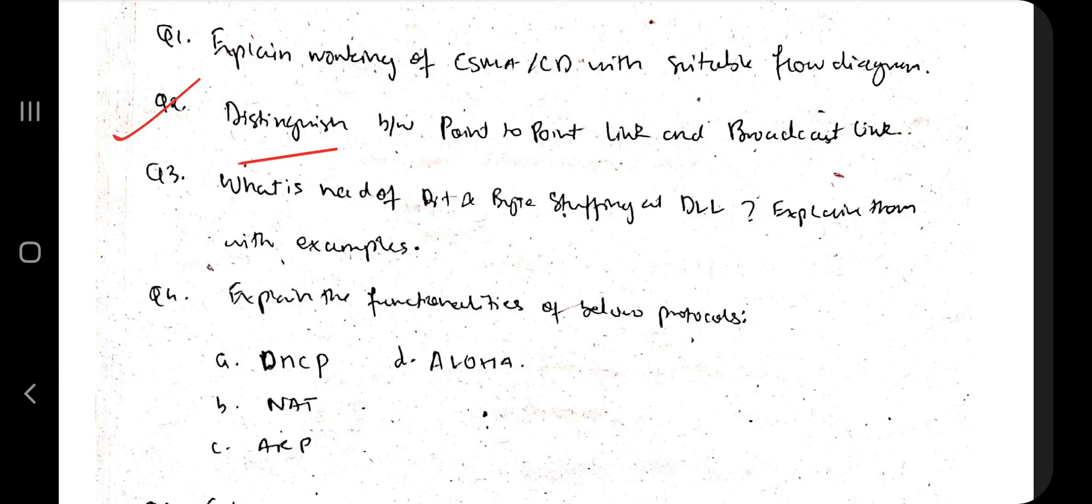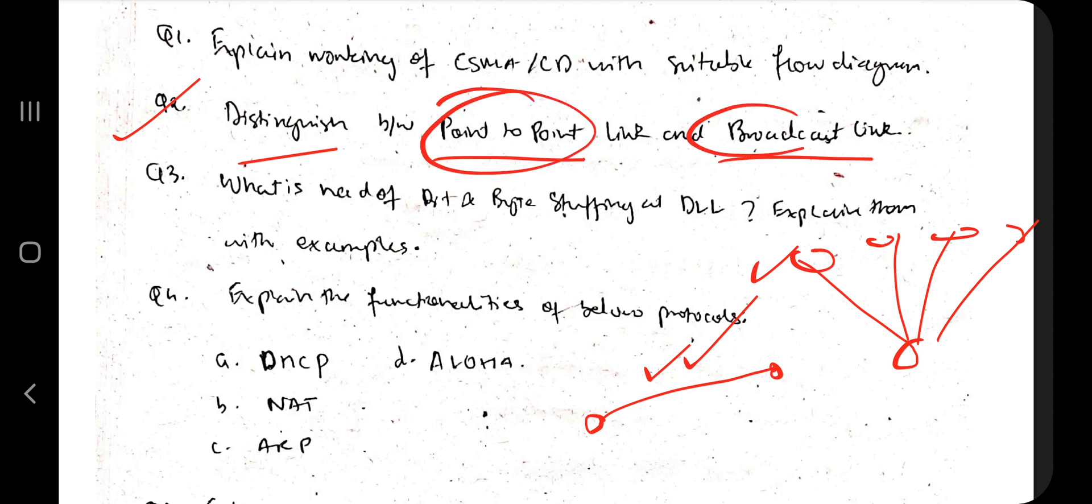Let's move on to the next question, which is distinguish between point-to-point link and broadcast. What is point-to-point, one-to-one? What is broadcast, one-to-many? You have to make the circuit diagram, explain each aspect of this, what are the applications and the context, and what are its different advantages and disadvantages. When should this be used, when should that be used?